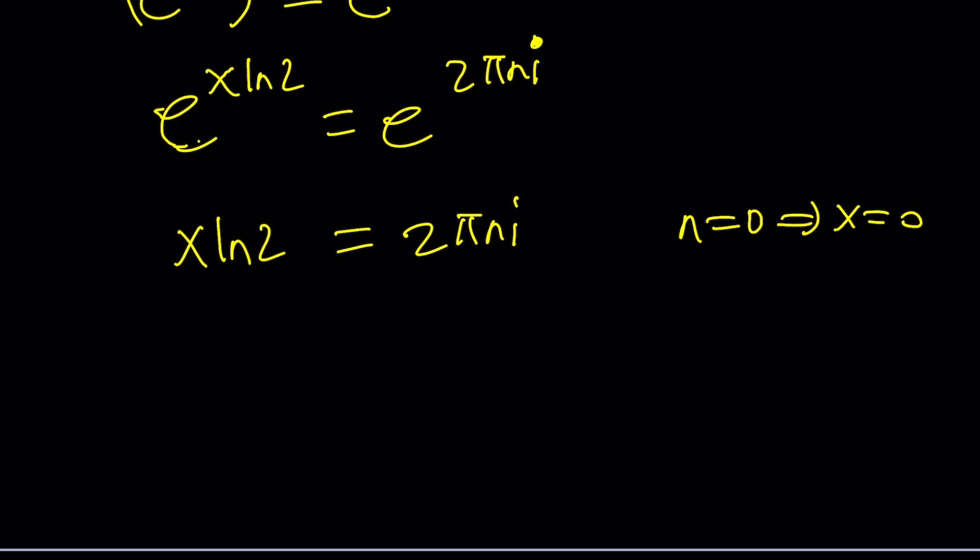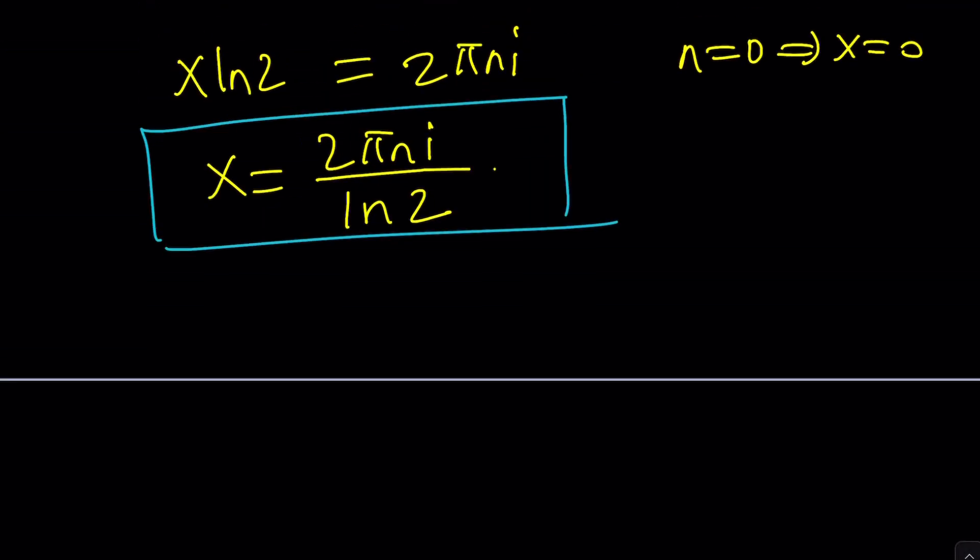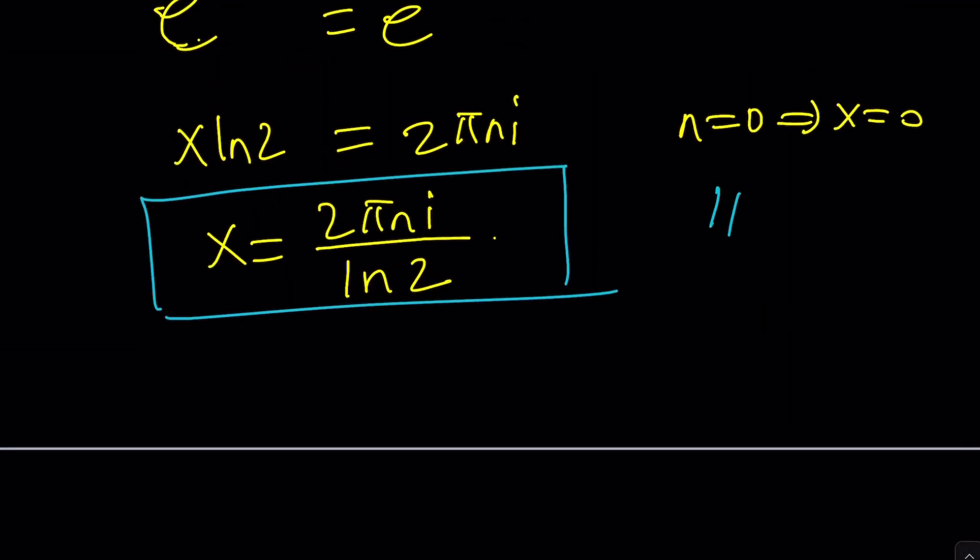Anyways, let's divide both sides by ln 2 and we'll get our complex, or should I say imaginary, solutions. Great. So, there are basically infinitely many complex solutions. You can replace n with anything you want and proceed with that. I'm going to go ahead and show you a graph and then we'll finish up with that. But that will be the general solution for this equation, right?